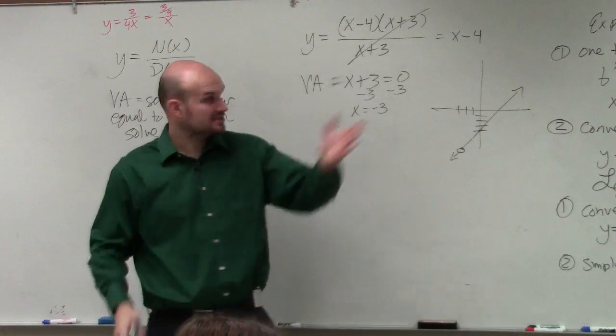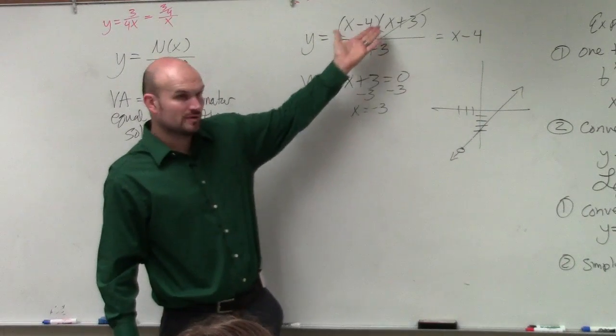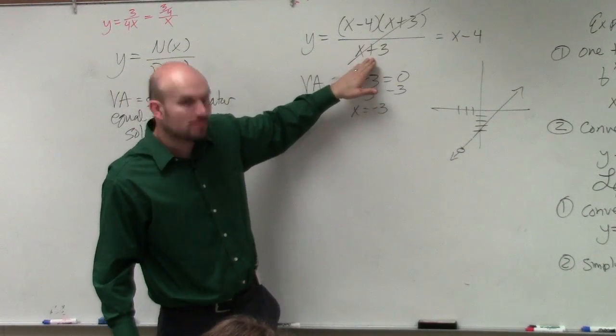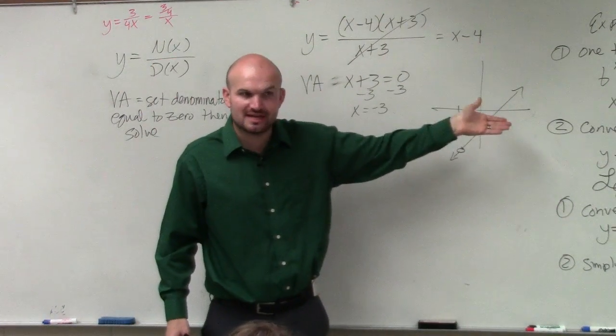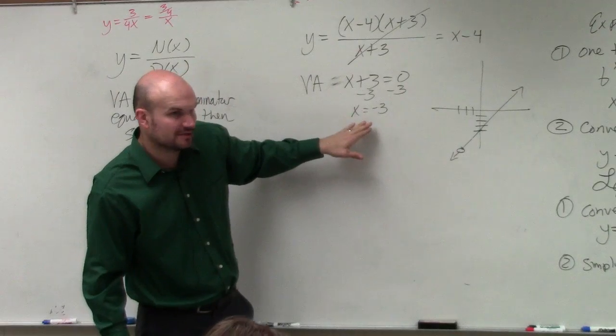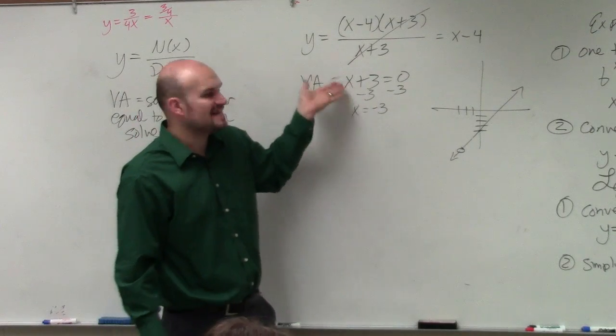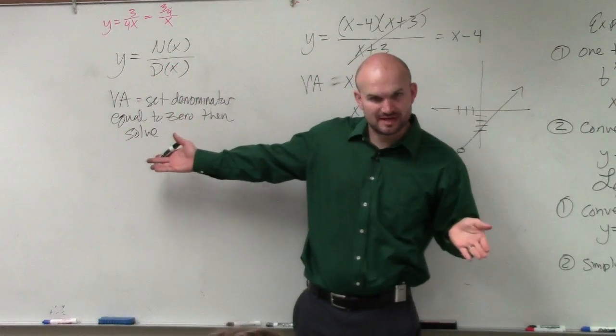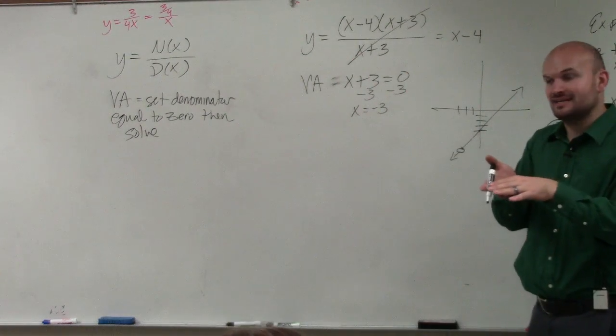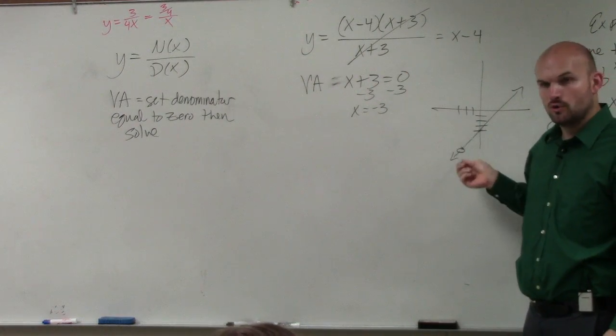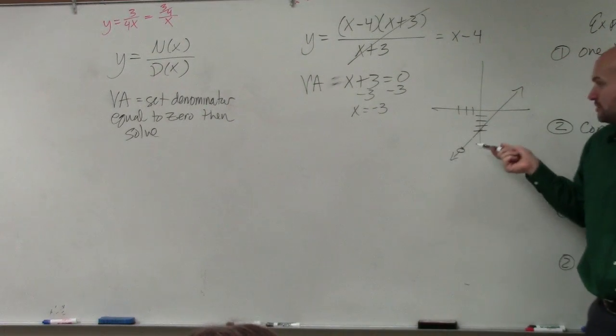So the graph is still a line, but originally, you have a removable discontinuity. So when you have a removable discontinuity, you'd still set the denominator equal to 0 and find it. But it's not going to be an asymptote like my previous definition. When it's removable, meaning you can divide it into 1, it's called a hole. And graphically, it would look like this.